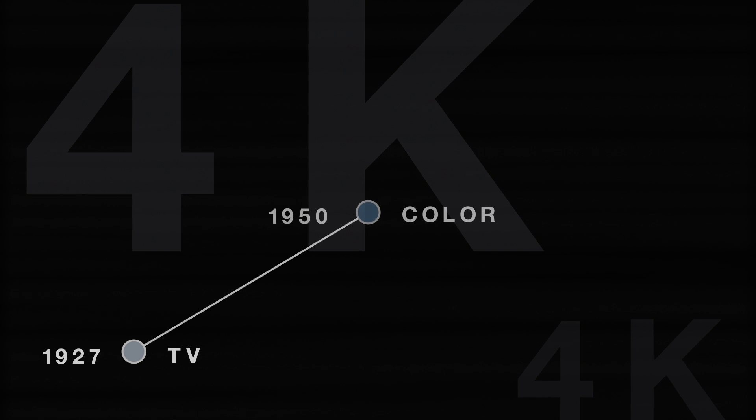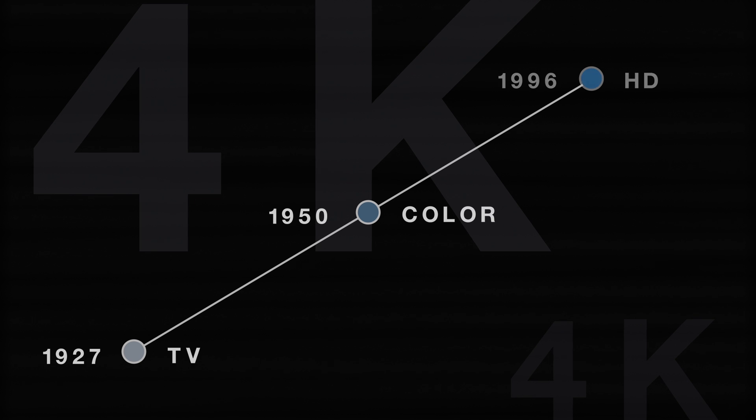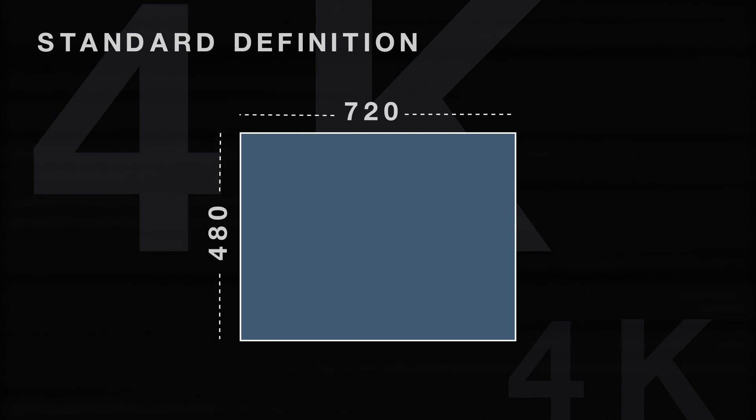A little bit of history: television was introduced to the public in the late 1920s, color was added in the early 1950s, and it wasn't until about 2000 that we introduced high-definition TV. At that time, we renamed what we had been watching as standard definition television — 480 lines of resolution by 720 pixels, with a 4 by 3 aspect ratio.